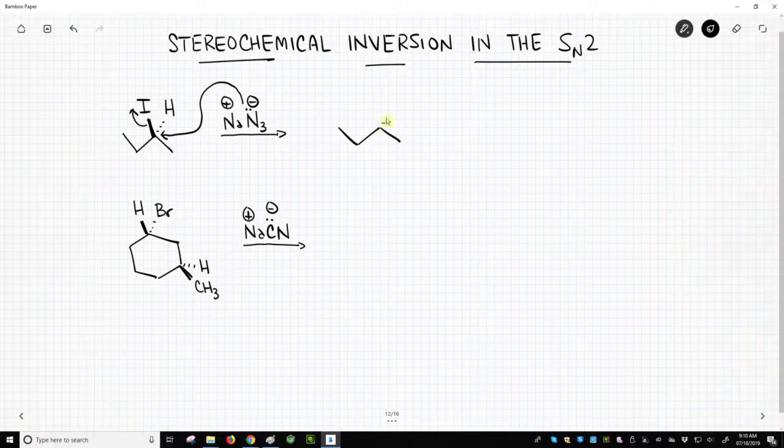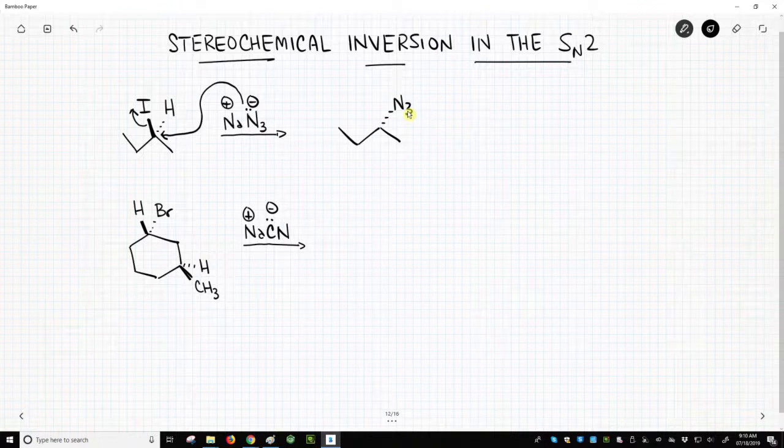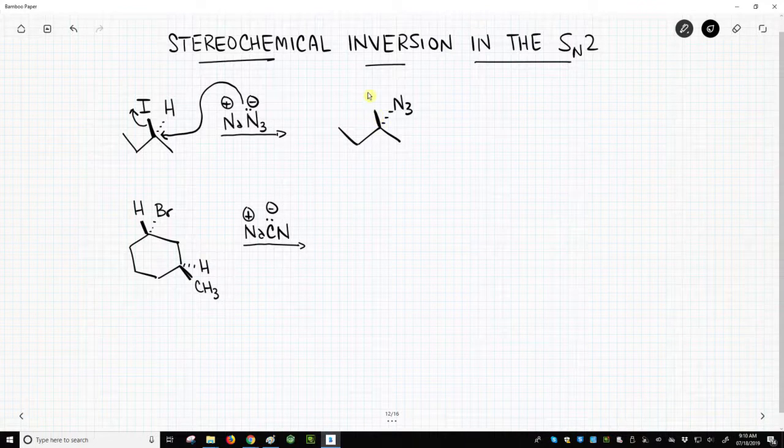then that means the azide will now have the hashed position below the plane of the writing surface. The hydrogen has now been pushed forward to the top, and the iodide is gone.